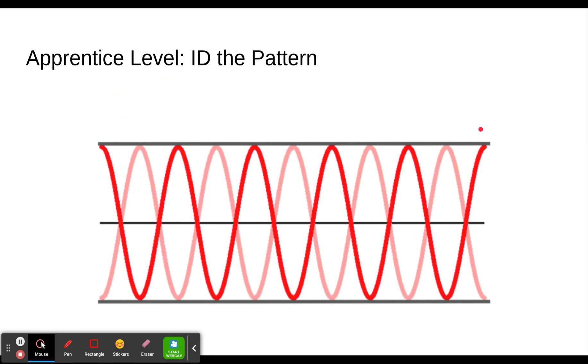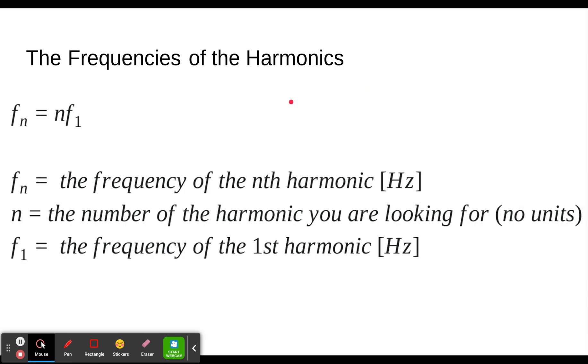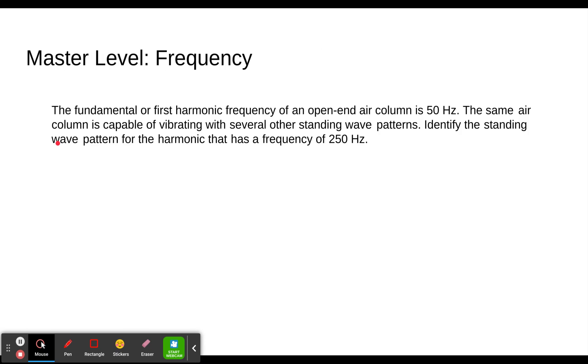Moving on to the frequencies. So frequencies are the same as the last time. I'm not going to spend a long time doing this, but the frequency of the nth harmonic is n times the frequency of the first harmonic. Let's see how that works in our problem here. The fundamental or first harmonic frequency of an open-ended air column is 50 hertz. Remember, that's always the lowest or smallest frequency. The same air column is capable of vibrating with several different standing wave patterns. Identify the standing wave pattern for the harmonic that has a frequency of 250 hertz.